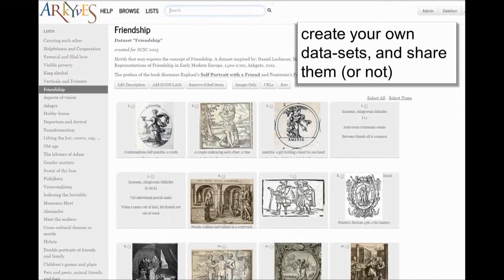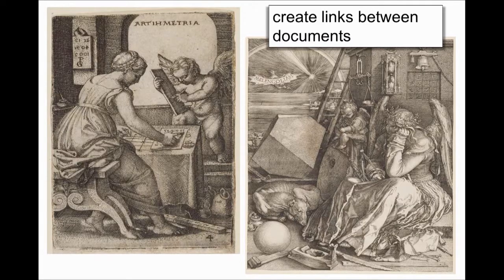Another feature is that you can create your own dataset and share it, or keep it for yourself. The dataset shown here is on the theme of friendship, which I created some time ago. You can see that it cuts across iconclass concepts — you can select your own label, create a little bit of text describing the purpose of the selection, and then select whatever image or piece of text, like this proverb, you think is relevant for this selection on friendship.